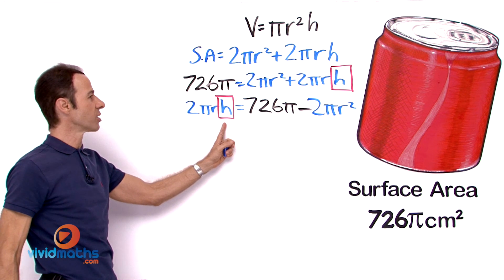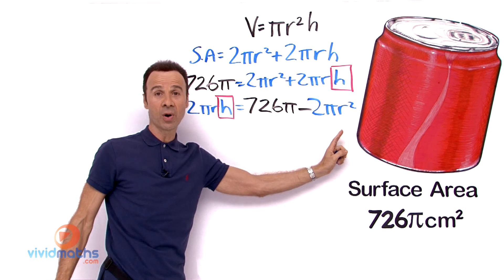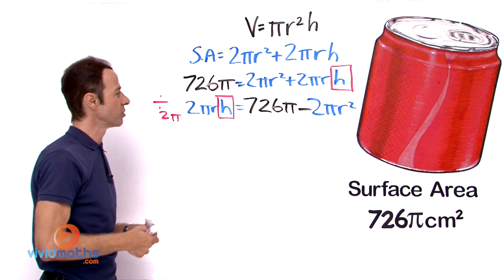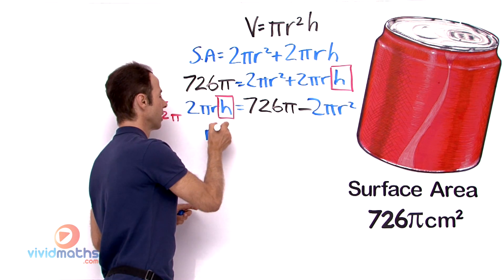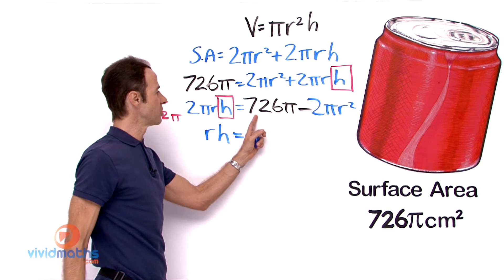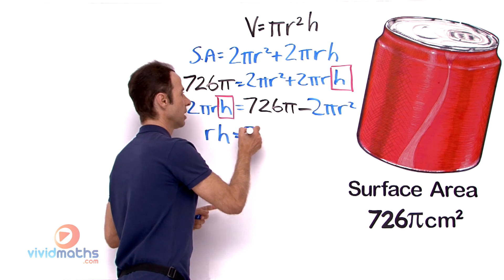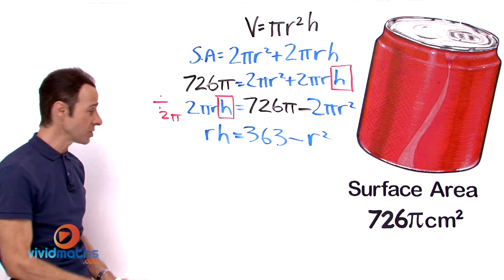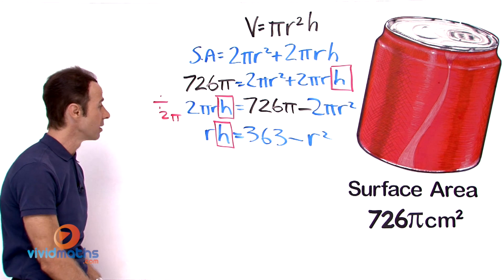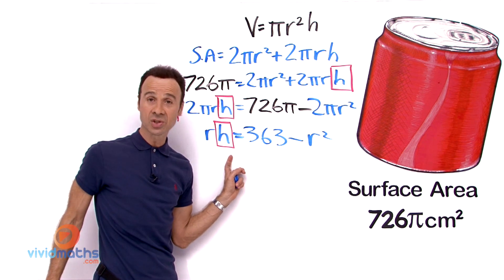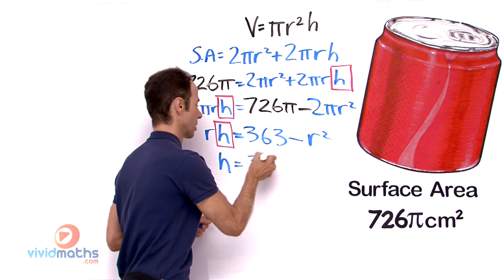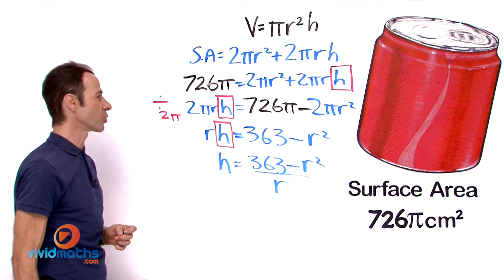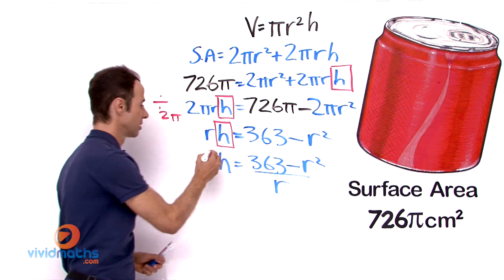To further simplify and make h the subject, we divide throughout by 2π. This eliminates the 2π, leaving: rh = 363 − r². Then we divide both sides by r, thus making h the subject: h = (363 − r²) / r.